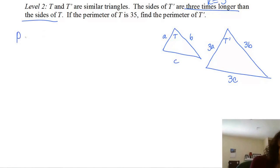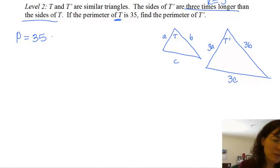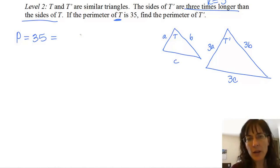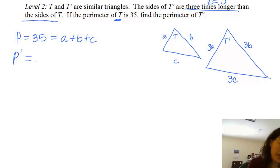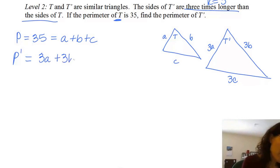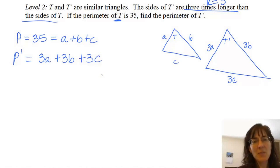If I know the perimeter of t is 35 — and be careful, make sure that says t, not t prime, so you're using it for the right one — the perimeter of t is 35. Remember, perimeter means adding up all the sides, so I have a plus b plus c. And then for p prime, I want to know what that is, so I'll add up all the sides: 3a plus 3b plus 3c.